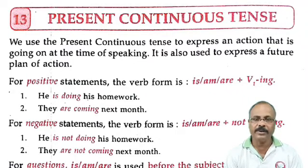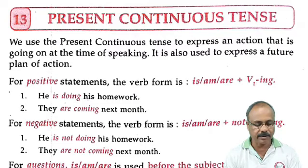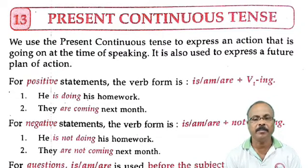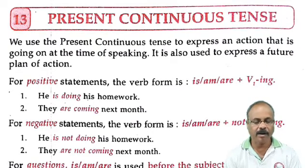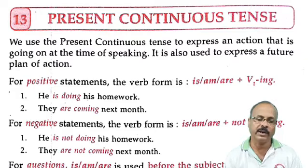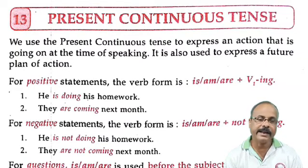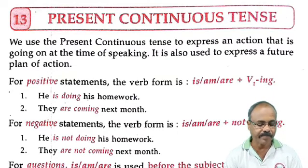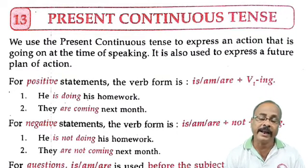For positive statements, the verb form is AM/IS/ARE plus ING, or V1 plus ING. For example: number one, 'He is doing his homework.' Number two, 'They are coming next month.'